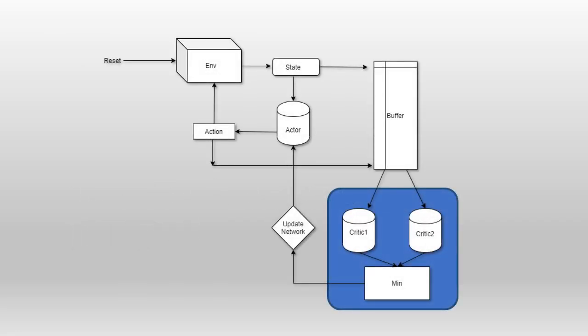Twin-delayed DDPG is a simple extension to DDPG, which has two critic networks, and both of them learn together. We pick the minimum output of the two networks to use as our update for the actor network. We also update these networks after a small delay and don't update them immediately.